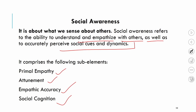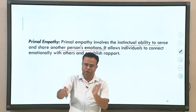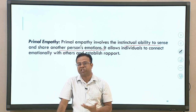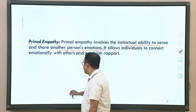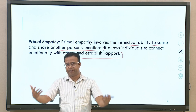Primal empathy is the instinctive ability to sense and share another person's emotions — some people can very instinctively and instantly understand others' perspectives and feelings. This ability to understand others' worldview and share their emotions allows individuals to connect emotionally with others and establish rapport. Attunement is the capacity to accurately perceive and understand non-verbal cues and signals from others, including being attentive to facial expressions, tone of voice, and body language — human emotions are often expressed more through body language than through words.